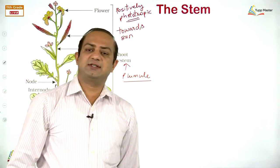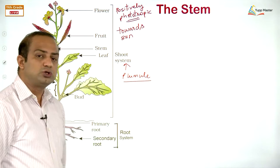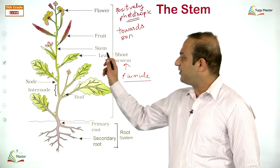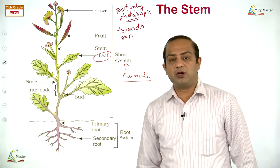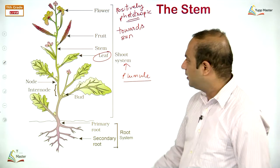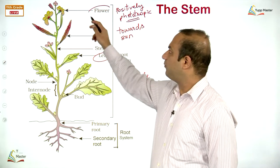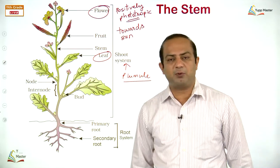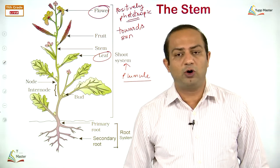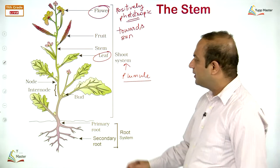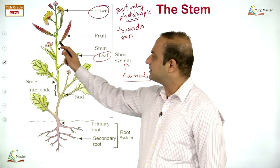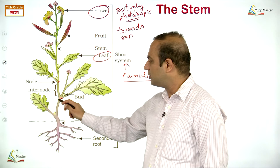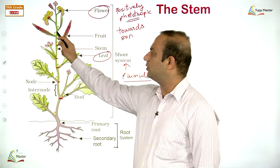The shoot system consists of vegetative and reproductive parts. Leaf is vegetative; flower is reproductive. The shoot system bears both types of parts and holds them towards the sunlight. Leaves arise at certain places on the stem labeled as nodes. Between two consecutive nodes, the region is called the internode.